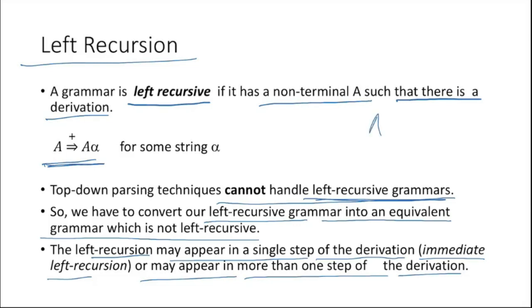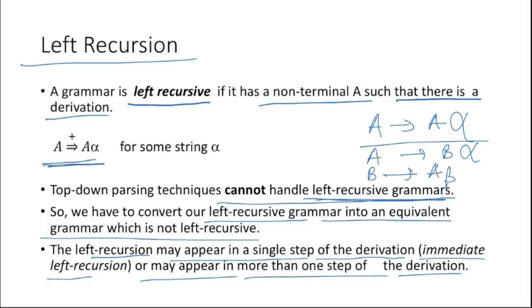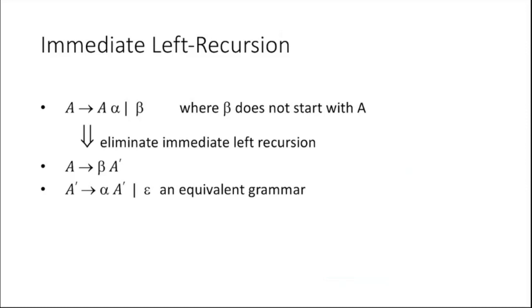Left recursion may appear in a single derivation step — called immediate left recursion — like A → A alpha, or it may appear in more than one step. For indirect left recursion, you could have A → B alpha and B → A beta, which leads to the derivation A → B alpha → A beta alpha. This is another way left recursion can appear.